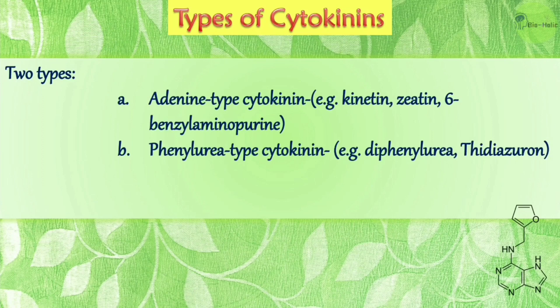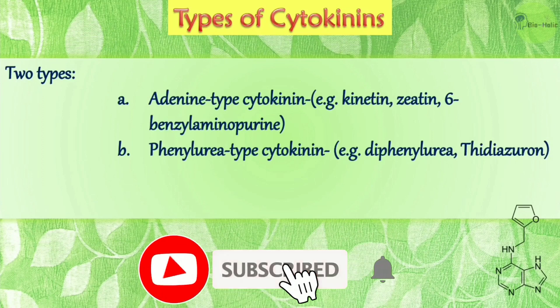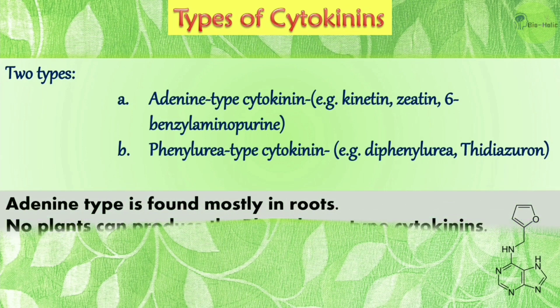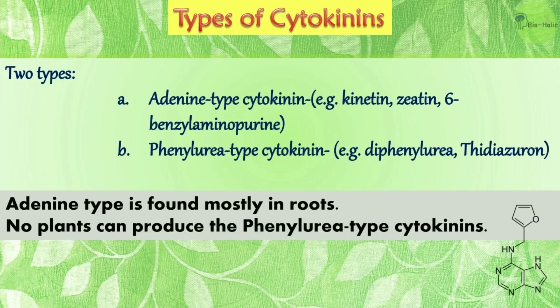Cytokinins are mainly of two types. The first is the adenine-type cytokinin — for example, kinetin, zeatin, and 6-benzylaminopurine. The second is the phenylurea-type cytokinin — for example, diphenylurea and thidiazuron. The adenine-type cytokinin is found mostly in the roots. Interestingly, no plants can produce the phenylurea-type cytokinins, so all phenylurea-type cytokinins are synthetically produced.